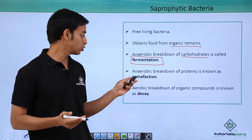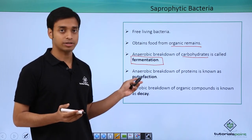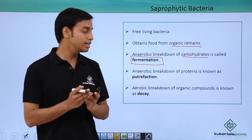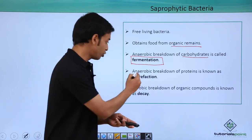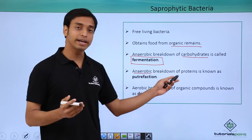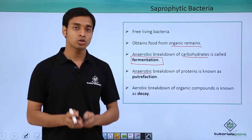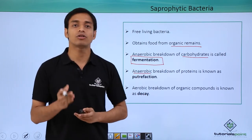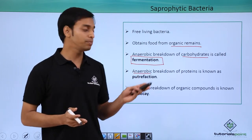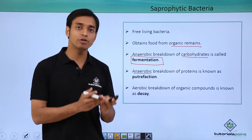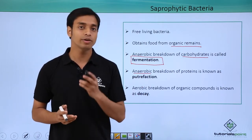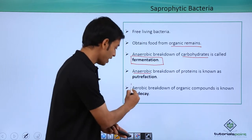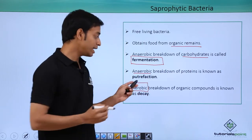The next process is known as putrefaction. This is also an anaerobic process in which the breakdown of proteins occurs. So in fermentation it is the anaerobic breakdown of carbohydrates, whereas in putrefaction it is the anaerobic breakdown of proteins.